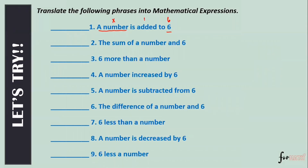The operation involved is addition. So if we're going to translate that into a mathematical expression, we have six plus x. Why is it six plus x and not x plus six? Because 'a number is added to six' — the number is being added to six, so it's six plus x. But for addition, we can also use x plus six since we can flip them.